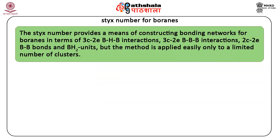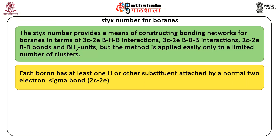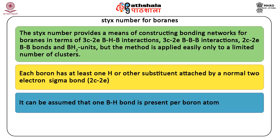The STYX number is used to understand the types of bonds in boranes. It is a method for determining what combinations of bonding features or types of bonds are possible for a specific formula of boron hydride. Each boron in neutral boron hydride, hydroborate ions, and carborane cations has at least one hydrogen attached by a normal two-electron sigma bond — two-center, two-electron. It can be assumed that one boron-hydrogen bond is present per boron atom.